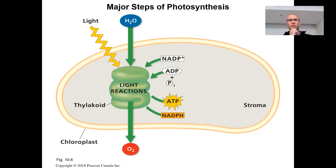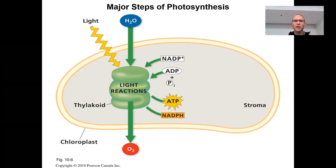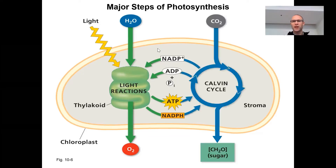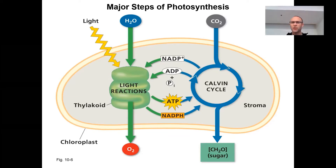We have light and water as the main ingredients, and we also have NADP+, which is a short-lived metabolite, so it's going to get recycled. We're going to make NADPH. We're also going to make some ATP. The byproduct is oxygen. So today we're going to talk about the Calvin cycle, and in the Calvin cycle we're going to make use of the ATP and the NADPH.